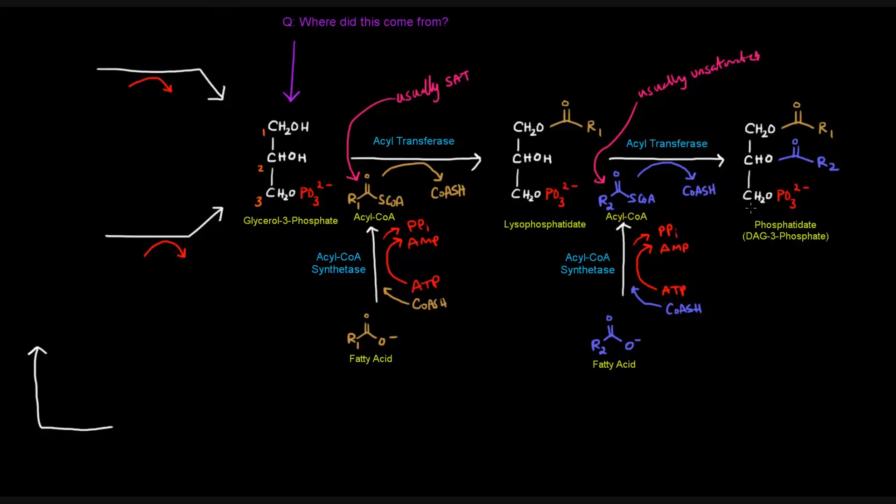So that's how we get phosphatidate, which is a precursor to our triglyceride that we mentioned earlier. Before we discuss further details about how we go from phosphatidate to the actual triglyceride, what I want to ask is where did this glycerol phosphate, or this glycerol-3-phosphate specifically, come from? It could have come from two places. It could have come from glycerol, which is glycerol-3-phosphate with no phosphates.